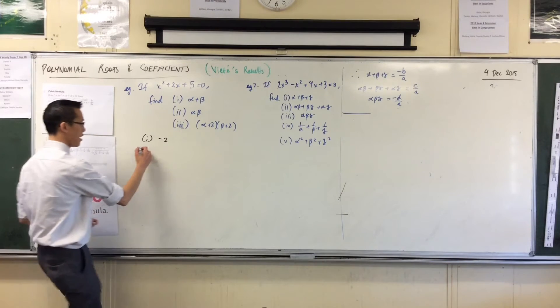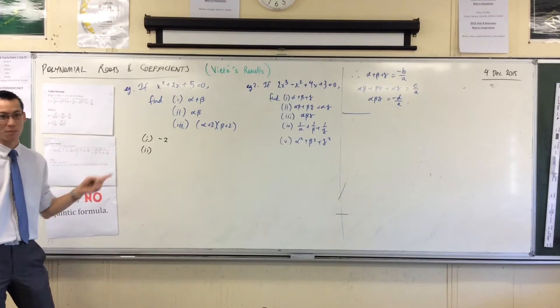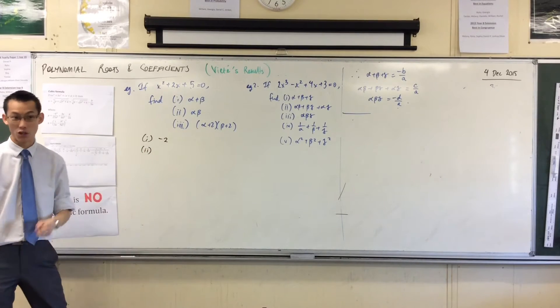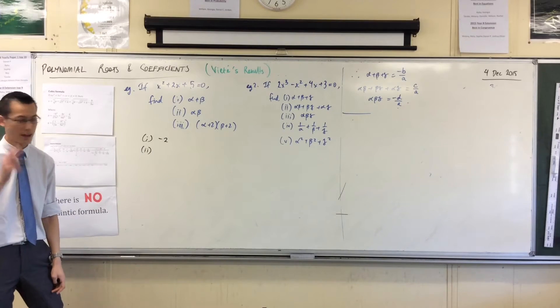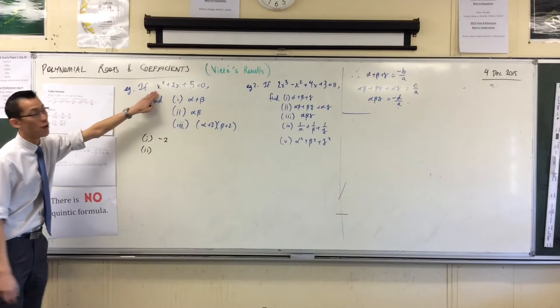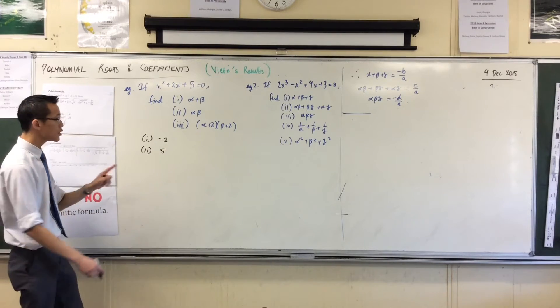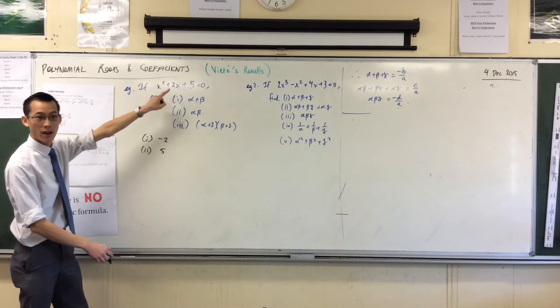Happy with that? The sum of the roots - I'm going to stop calling it the product of the roots, even though that's what it is. More generally speaking, it's the sum of the roots 2 at a time, is c on a, 5 over 1, it's just 5. So there's alpha plus beta, there's alpha beta.